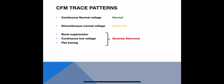Here is some of the terminology you might hear when people talk about CFM traces. We have continuous normal voltage, which is a normal trace; discontinuous normal voltage, which is abnormal; and then the severely abnormal traces: burst suppression, continuous low voltage, and a completely flat tracing. We'll now look at examples of all of these.